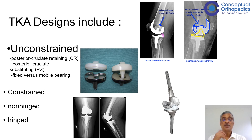In the standard fixed bearing implants, the tibial poly is locked onto the base plate, whereas in the mobile bearing there is mobility to a certain degree, which gives less wear of the particles.